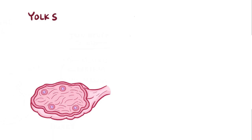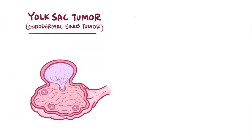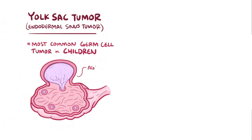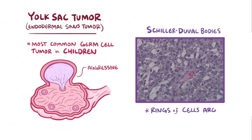The second subtype is a yolk sac tumor, also called an endodermal sinus tumor, and it's made of germ cells that differentiate into yolk sac tissue. These are the most common germ cell tumors in children, and the tumors can be very aggressive. Under the microscope, they form Schiller-Duval bodies, which are rings of cells around a central blood vessel.